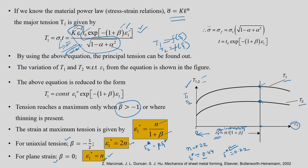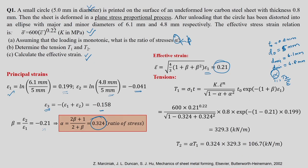Tensions t_1 and t_2 can now be obtained. t_1 equals k times epsilon_bar to the power n, divided by the square root of (1 minus alpha plus alpha squared), times t_0 times exponential of minus (1 plus beta) times epsilon_1. Substituting: 600 times 0.21 to the power 0.22, divided by the square root of (1 minus 0.324 plus 0.324 squared), times 0.8 times exponential of minus (1 plus (minus 0.21)) times 0.199. This gives t_1 approximately equal to 329.3 kN/m. Please check units consistently.